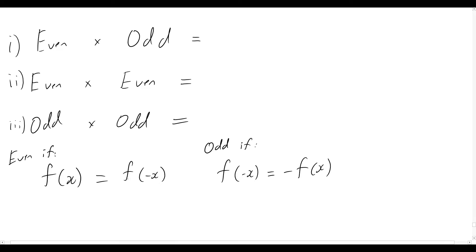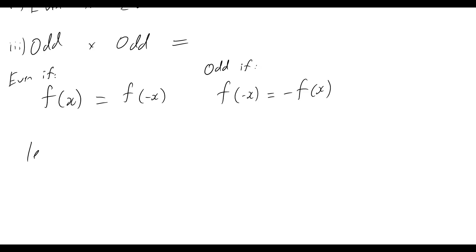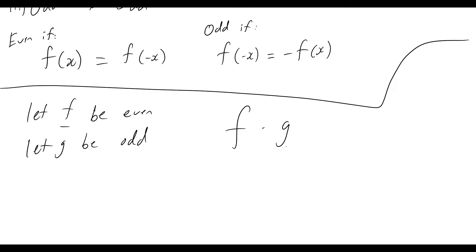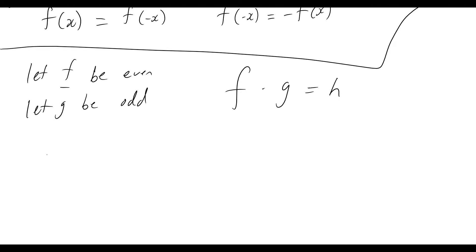Now let's dive into proving the first case: even times odd. Let f be even and let g be odd. That means f(x) must equal f(-x) for this even function, and for g, since it's odd, g(-x) must equal negative g(x). Now if I multiply these two functions together — I'll write that as f·g, not to be confused with a composite function — I'm saying f·g is equal to some function h. We're going to take a closer look at h and see if we can prove it's either even or odd.